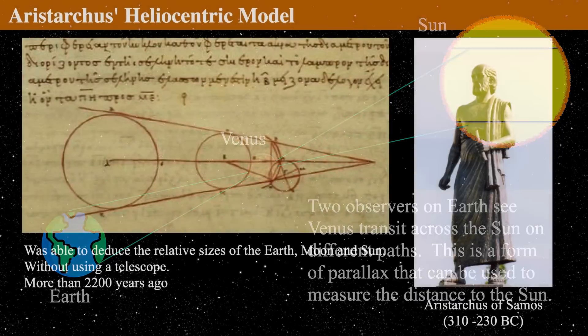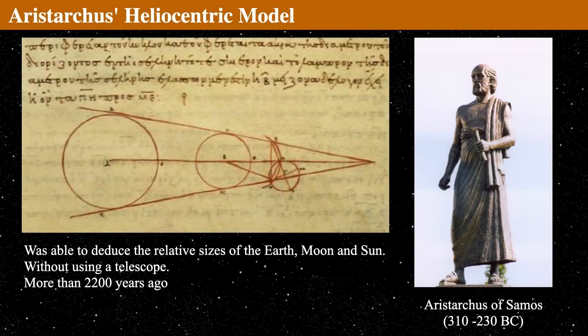Let's describe yet another ancient Greek philosopher, this one Aristarchus of Samos. Aristarchus lived from about 310 BC to about 230 BC. So this is over 2200 years ago.